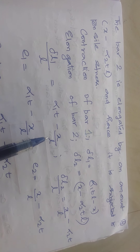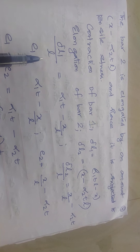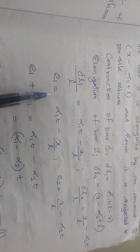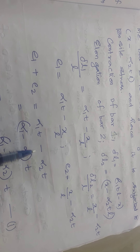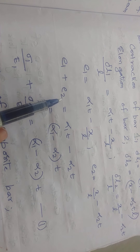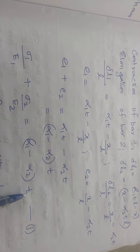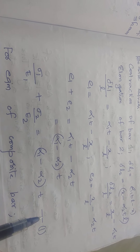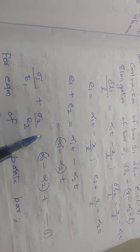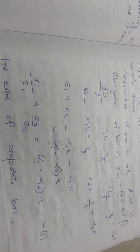Dividing by L: delta L1 / L = alpha 1 × T minus x/L, which gives strain epsilon 1. And delta L2 / L = x/L minus alpha 2 × T, which gives strain epsilon 2. Adding epsilon 1 plus epsilon 2, we get alpha 1 minus alpha 2, multiplied by T. Since epsilon 1 = sigma 1 / E1 and epsilon 2 = sigma 2 / E2, the expression becomes: sigma 1 / E1 + sigma 2 / E2 = (alpha 1 − alpha 2) × T.